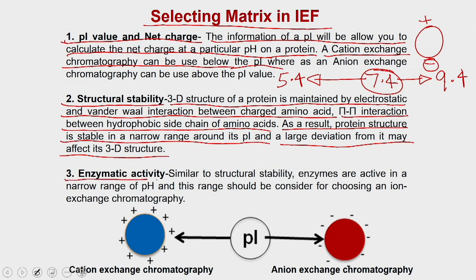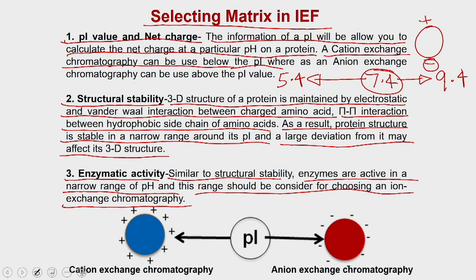The third is enzymatic activity. In case you are purifying an enzyme, similar to structural stability, enzymes are active in a very narrow range of pH, and this range should be considered when choosing ion exchange chromatography. If you go below the pI value, you can use cation exchange chromatography; if you go above the pI value, you can use anion exchange chromatography.